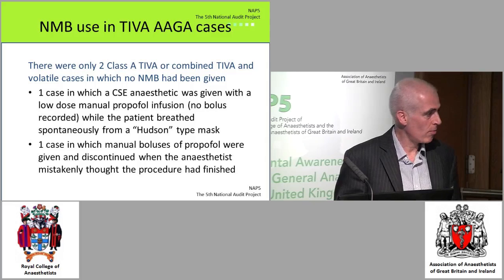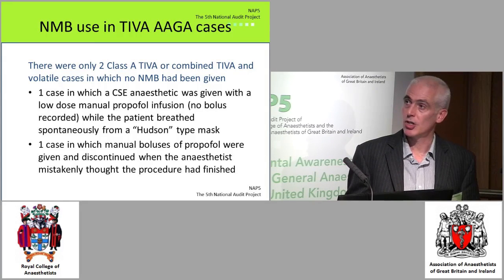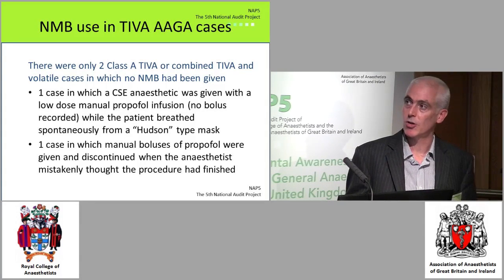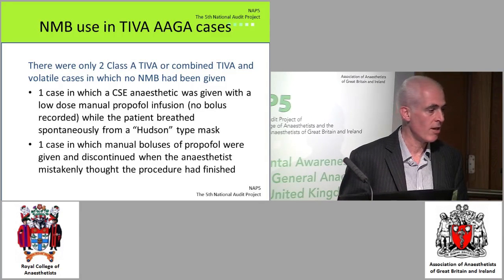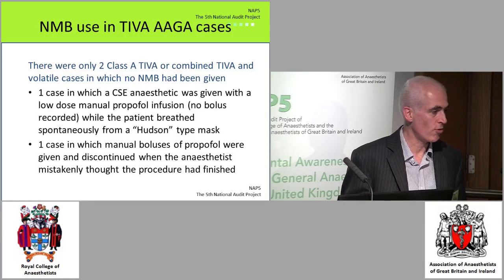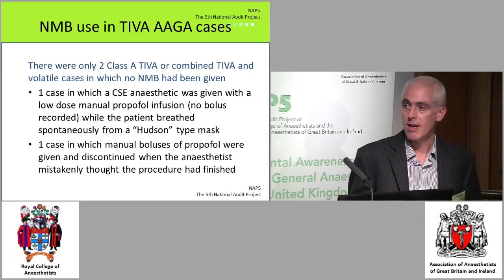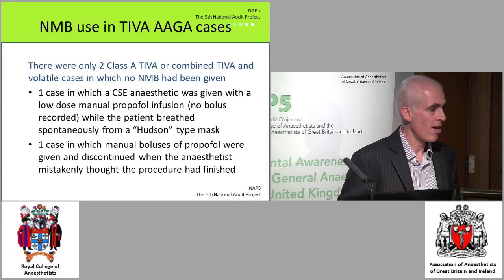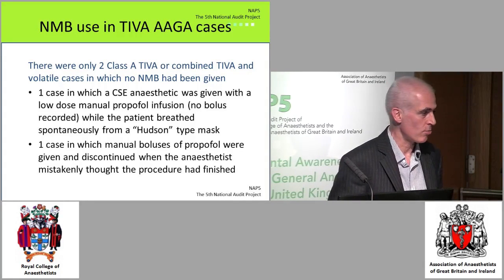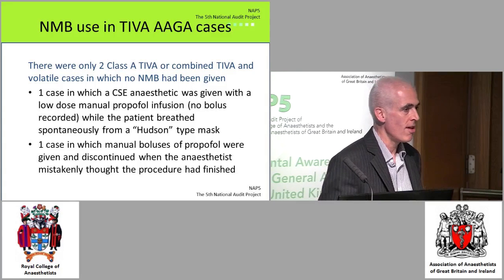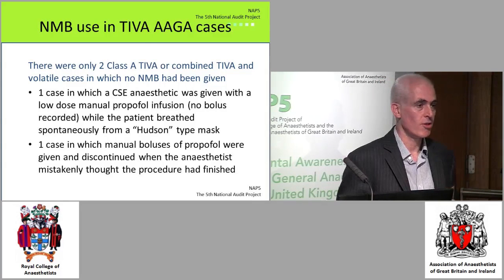Regarding neuromuscular blockers — of the Class A TIVA cases where we had information on causation, only two cases had not received a neuromuscular blocker: the combined spinal-epidural with a fixed propofol infusion where the patient remembered their leg being positioned, and the case where manual boluses were given and the anaesthetist mistakenly thought the procedure was finished. Apart from those, the cases of accidental awareness with TIVA were cases involving neuromuscular blockade. This has implications for recommendations about making cannulae visible and using BIS monitors — these really need to be focused on patients who have received a neuromuscular blocker.